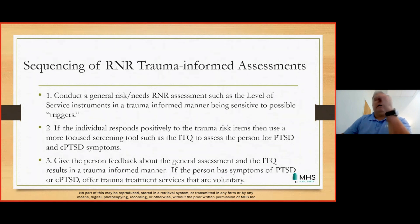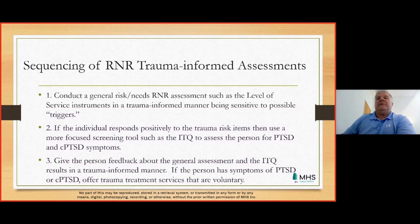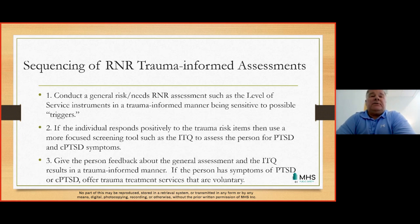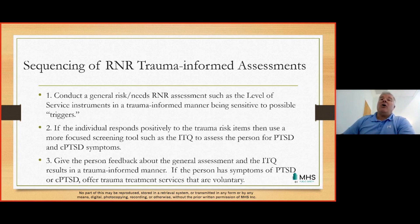On the sequencing of risk-needs and trauma-informed assessments: you want to conduct a general risk-needs assessment in a trauma-informed manner, being sensitive to possible triggers. If the individual responds positively to trauma risk items in the general recidivism instrument, you then move to a more focused instrument such as the ITQ, or International Trauma Questionnaire. I recommend giving the person feedback about the general assessment findings and, if applicable, the ITQ results — presented in a trauma-informed manner. If the person has symptoms of PTSD or complex PTSD, I recommend offering trauma treatment services that are voluntary.